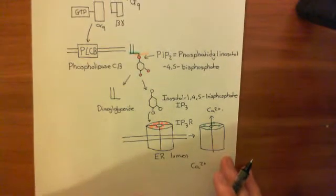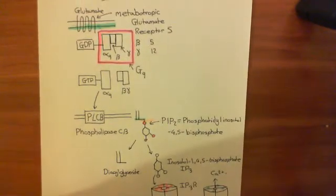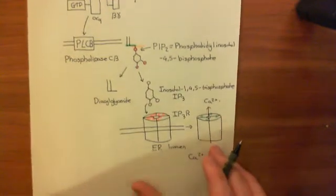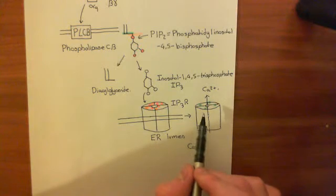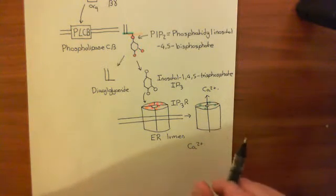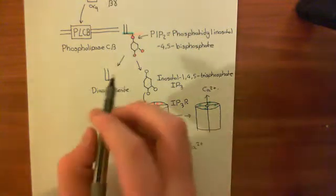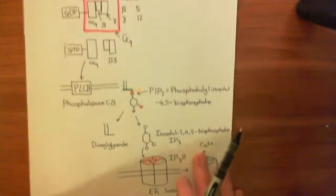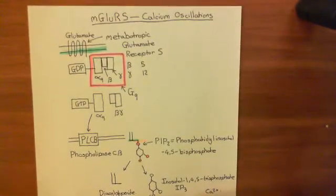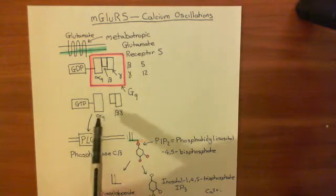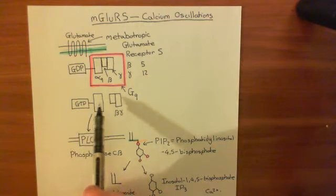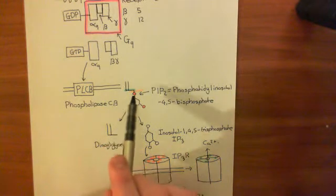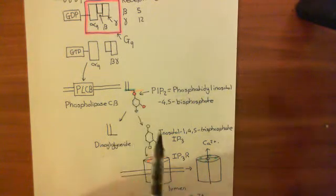So far we've seen how activation of mGluR5 can lead to the opening of calcium channels — these IP3 receptors — or at least priming them so that they're ready to open. What we haven't seen is how this is going to oscillate at all. We're going to have to look at the other arm of this pathway. The activation of mGluR5 by glutamate leads to the production of alpha-Q subunits bound to GTP, which activate the enzyme phospholipase C-beta, which then begins breaking down phosphatidylinositol-4,5-bisphosphate into inositol-1,4,5-trisphosphate and diacylglycerol.